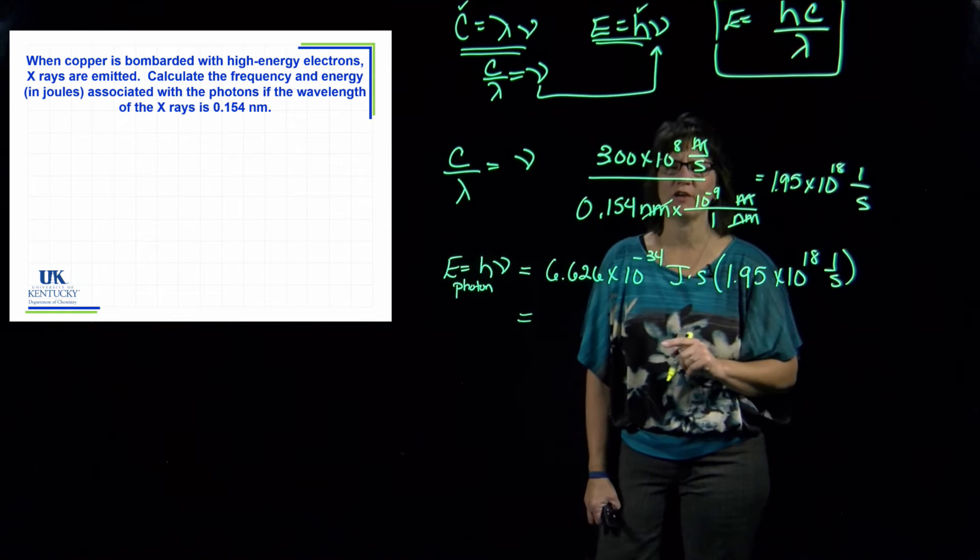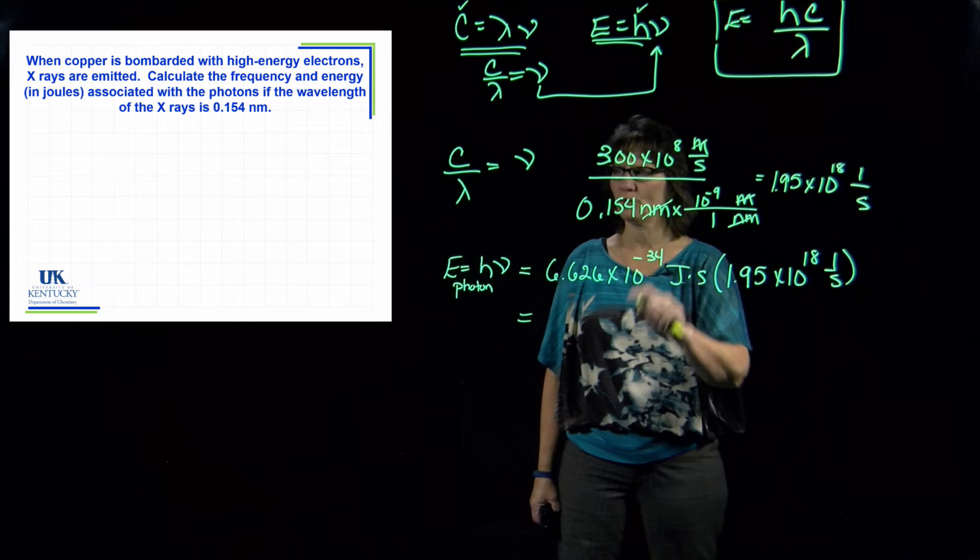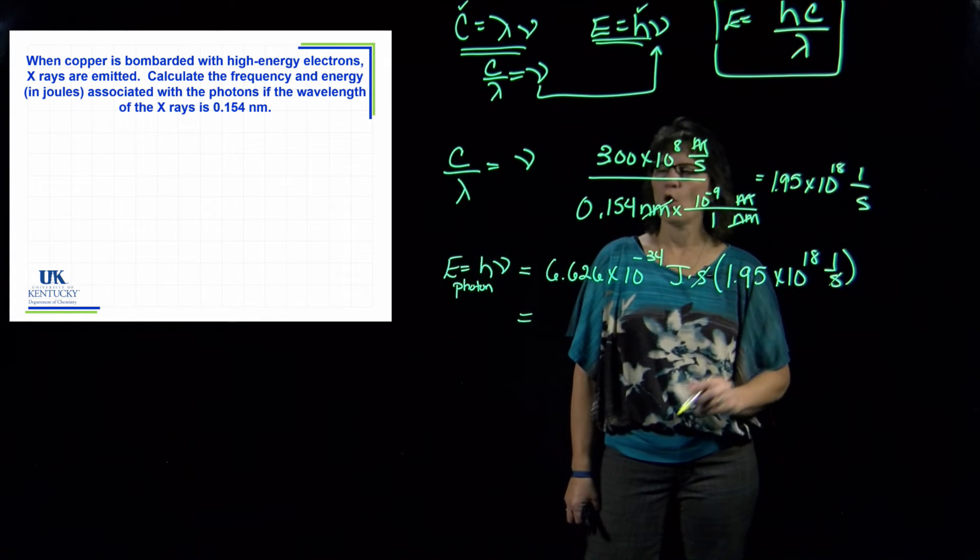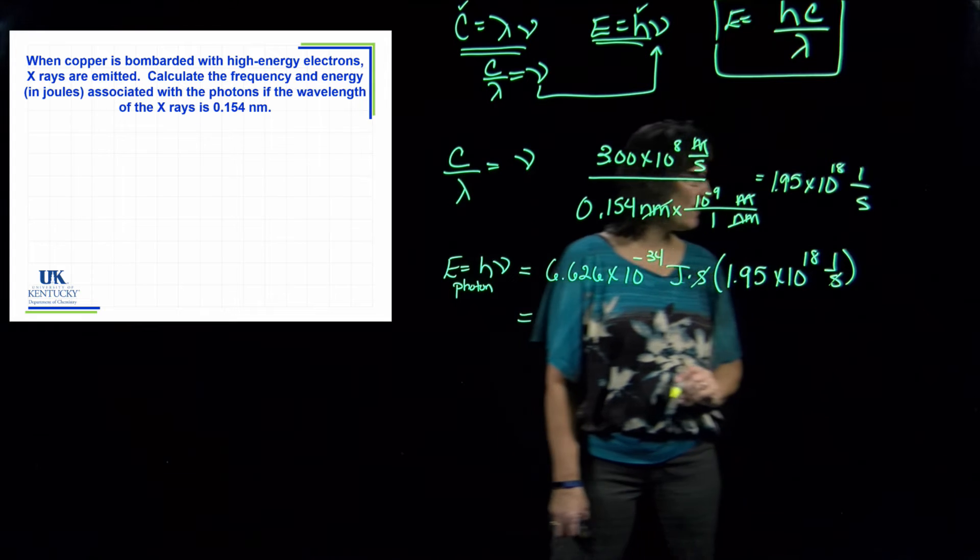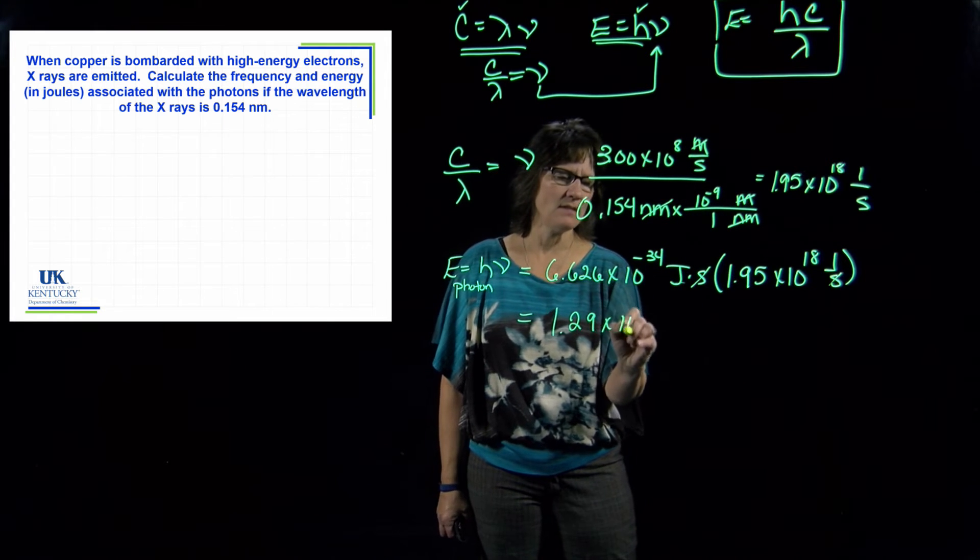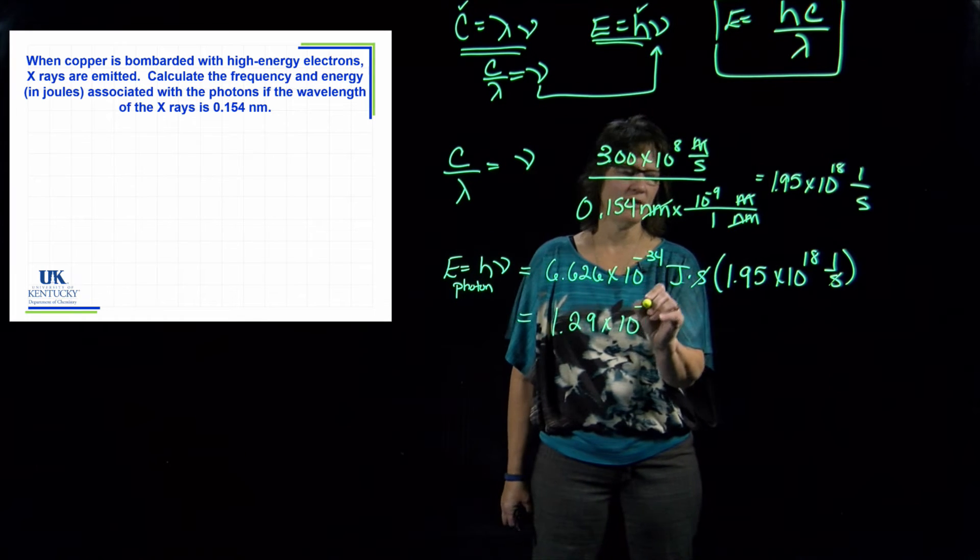Now the energy of one single photon is a very tiny number. Our seconds are going to cancel, we are left with joules, and the value for this is 1.29 times 10 to the minus 15 joules.